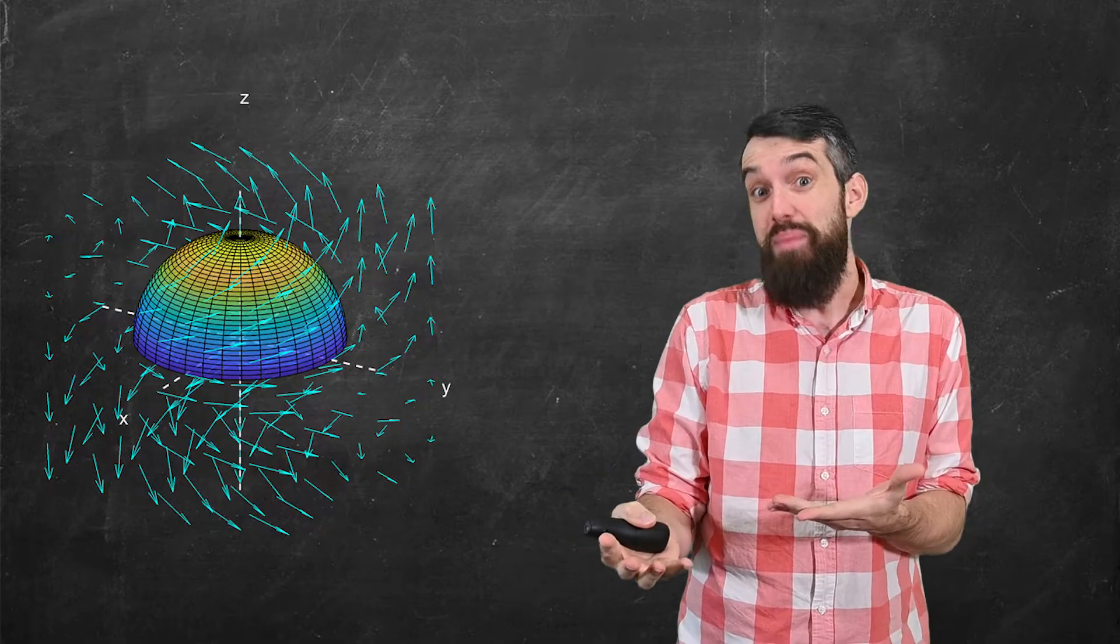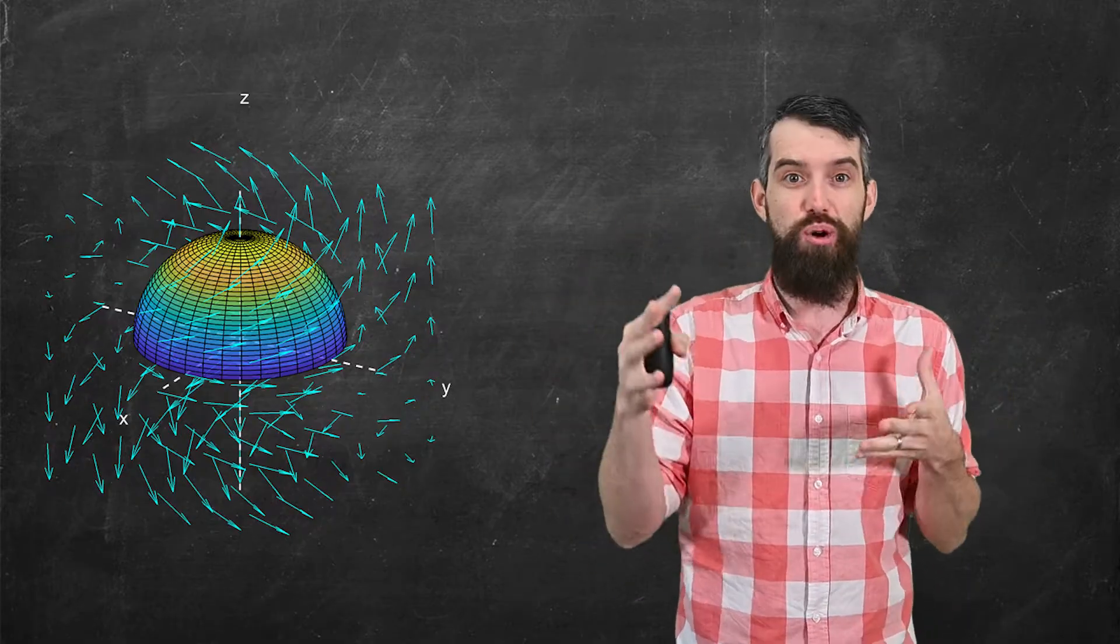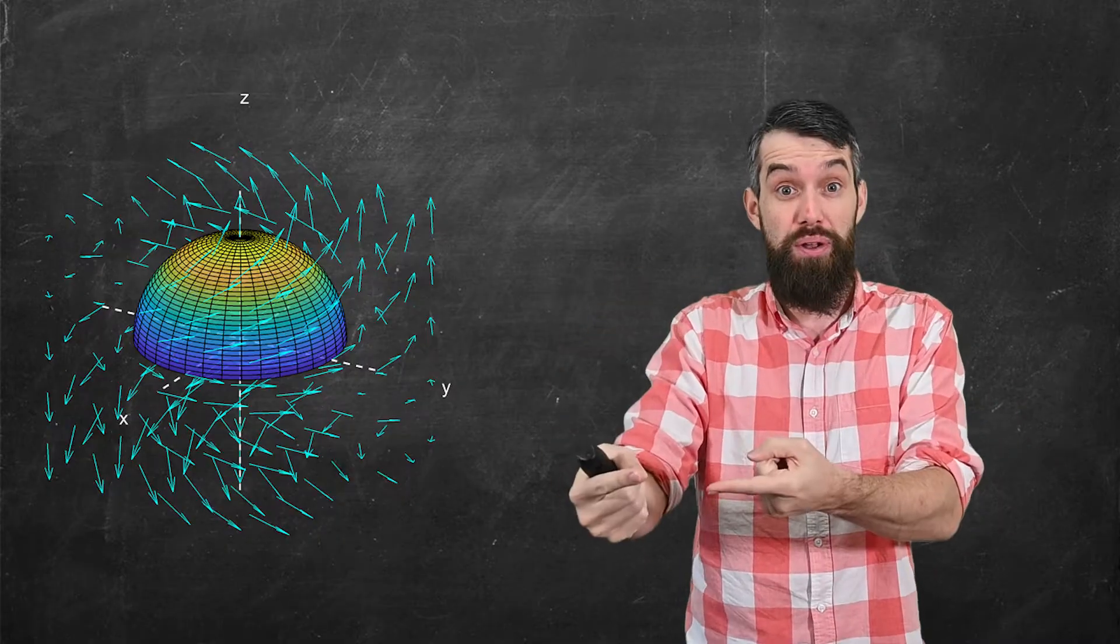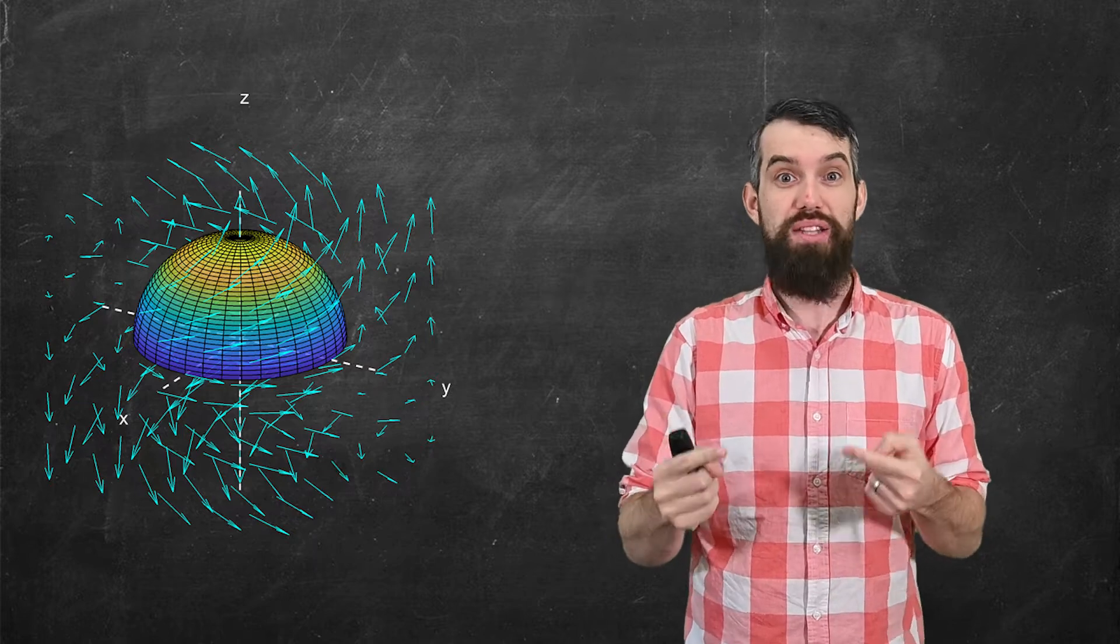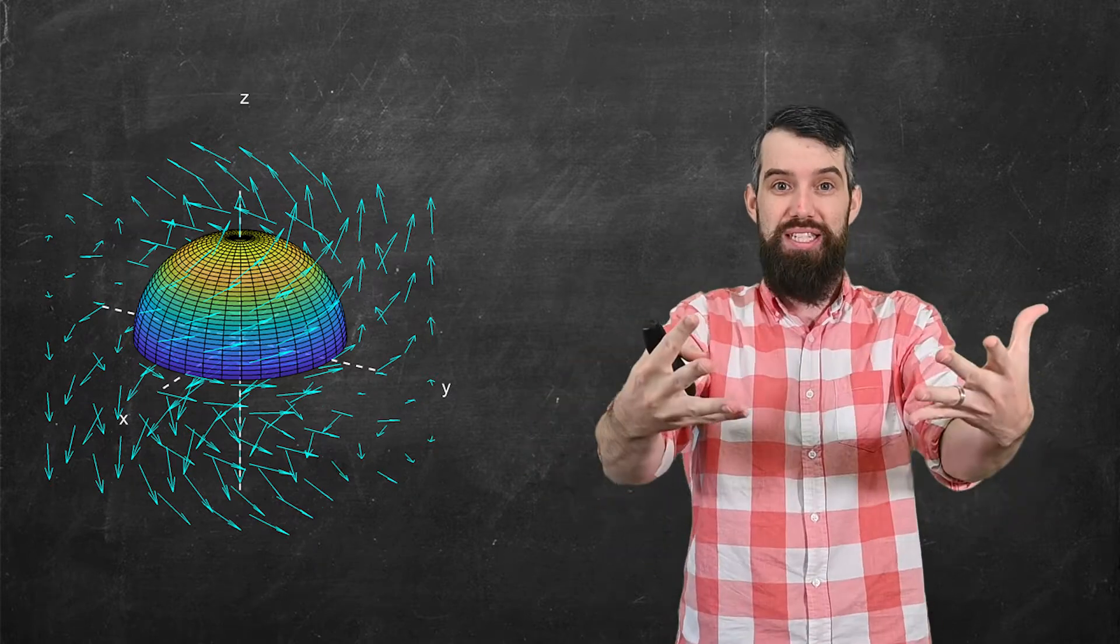For example, the vector field might be a velocity field where you've got some substance that's swirling around and it's moving in different directions according to the arrows in this vector field. And what I'm trying to measure with the concept of flux is the degree to which the vector field crosses the surface.